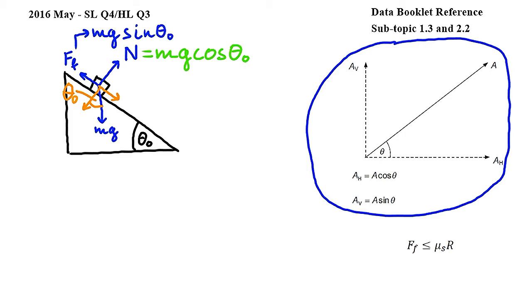Let's continue by using this equation from subtopic 2.2. Here, Ff is the friction force, mu s is the coefficient of static friction, and r is the normal reaction force. Since in our drawing the object is just about to start to move, we will use the equal sign from this expression.